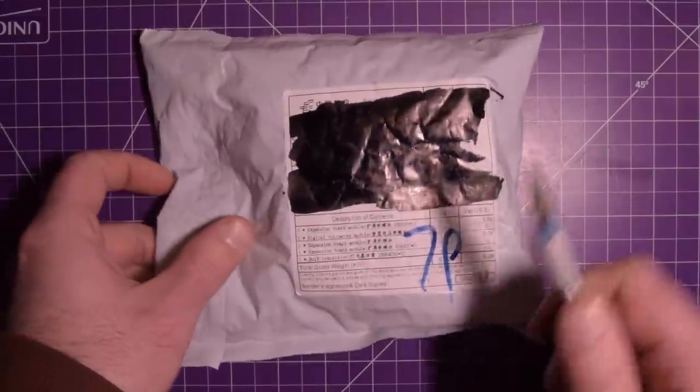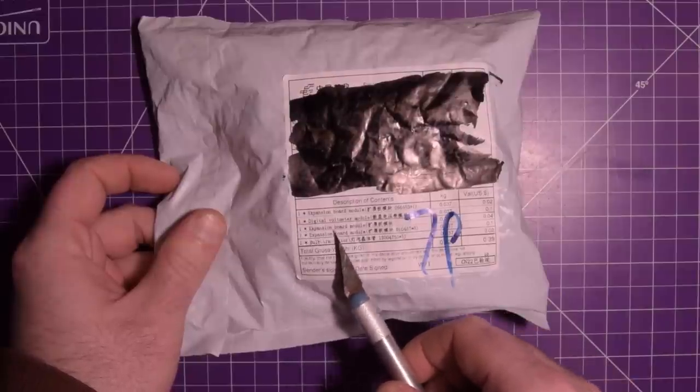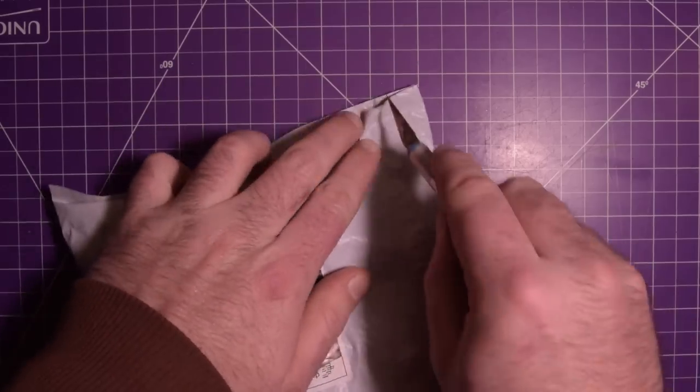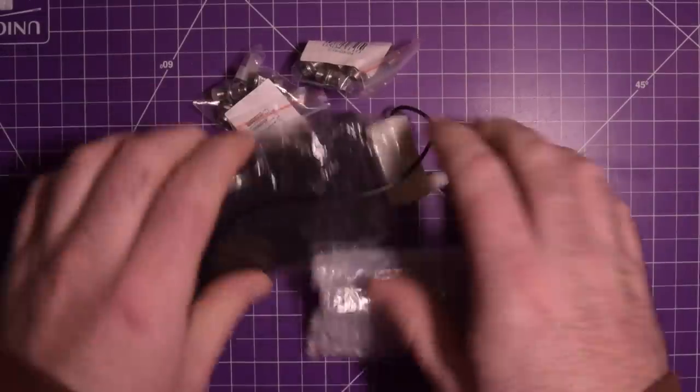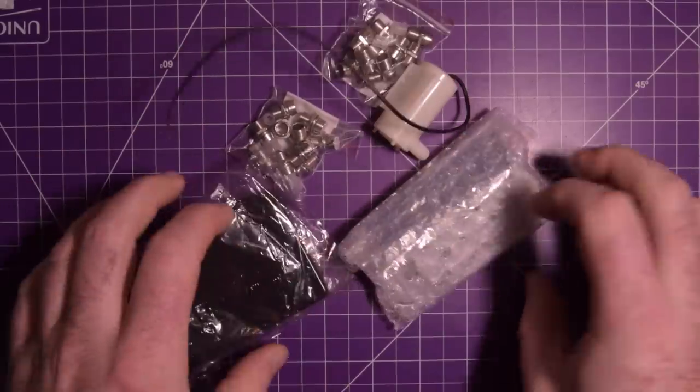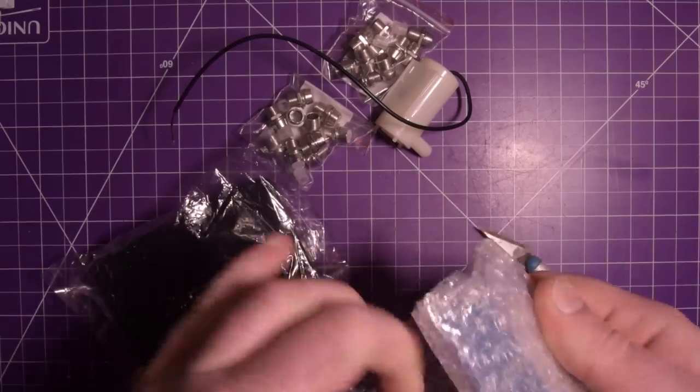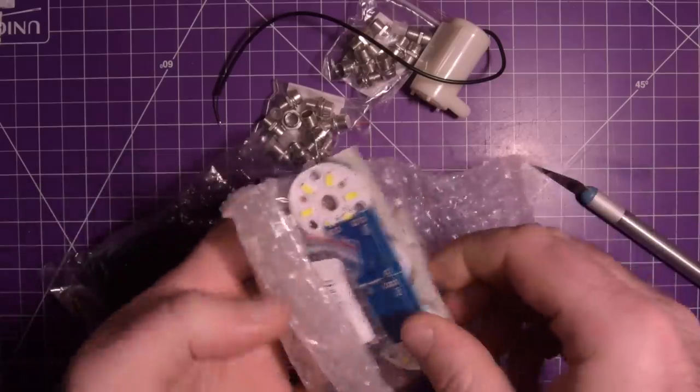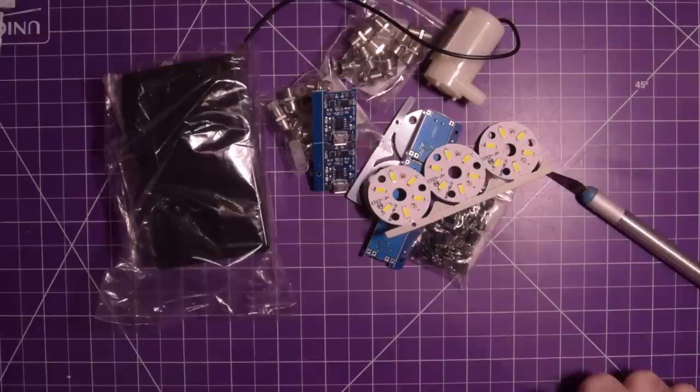So without further ado actually let's see what the descriptions say. One times expansion board module, one times digital voltmeter module, one times expansion board module, one times expansion board module, and one times bulb transistor. So let's see what kind of goodies we have in store. I'm not sure if these are the only things I've ordered. I thought I had ordered some more stuff. Maybe some of these are wrapped together. Well then where do we start? Let's work our way from mundane or at least the most mundane to the most interesting.